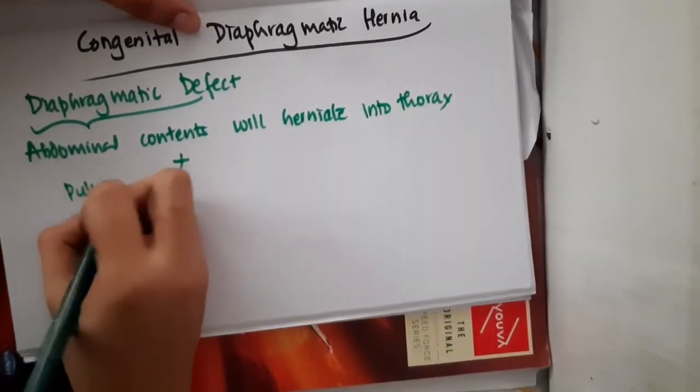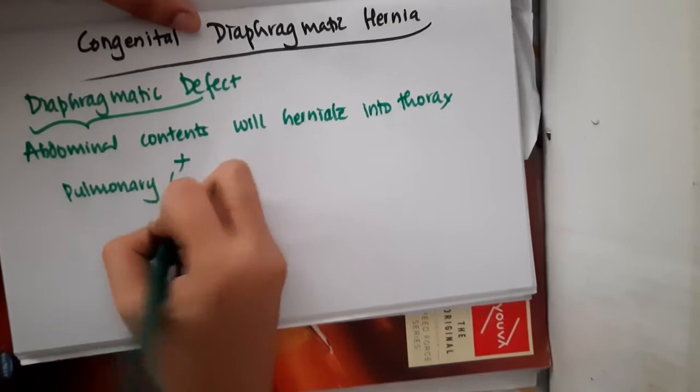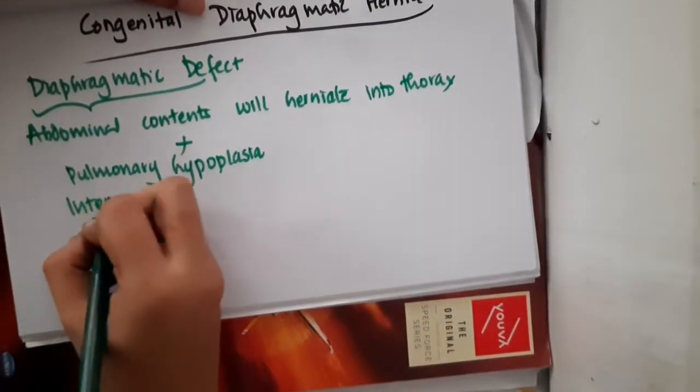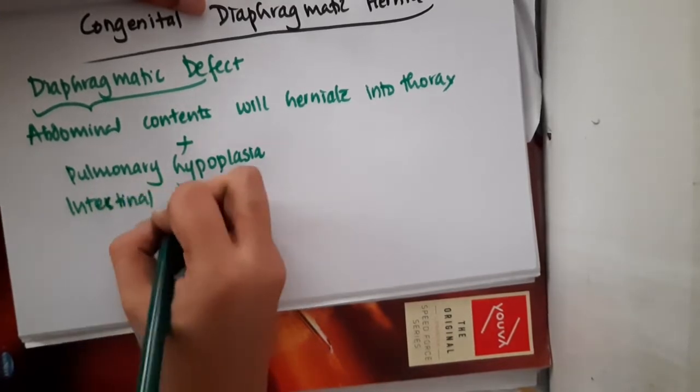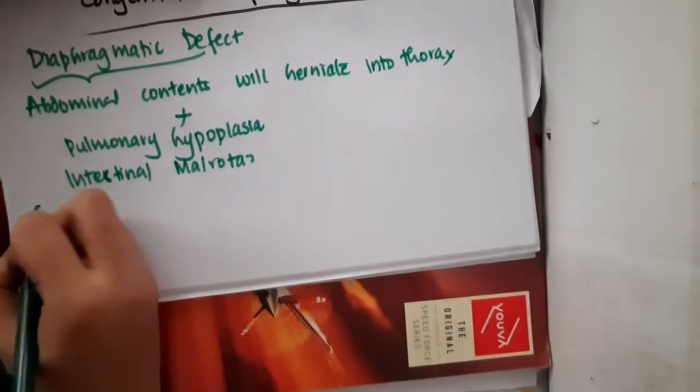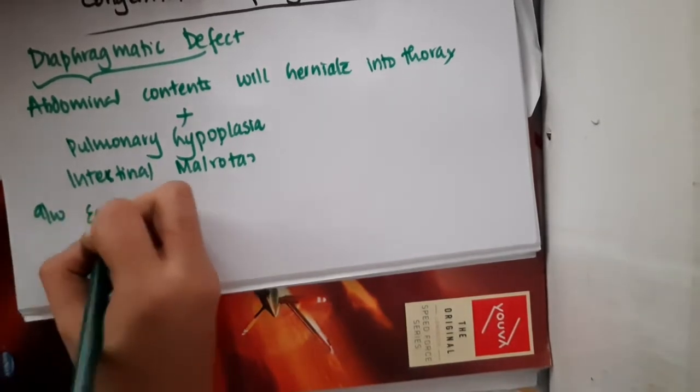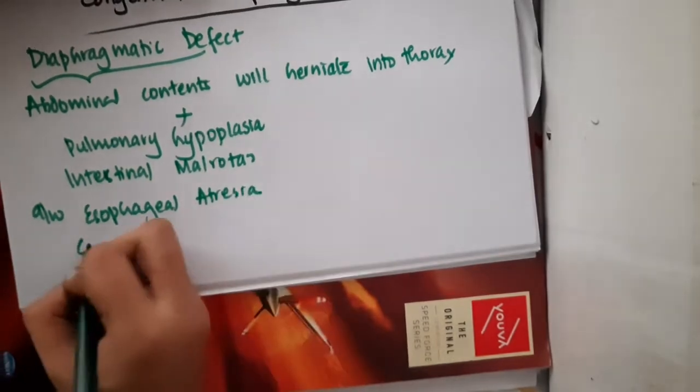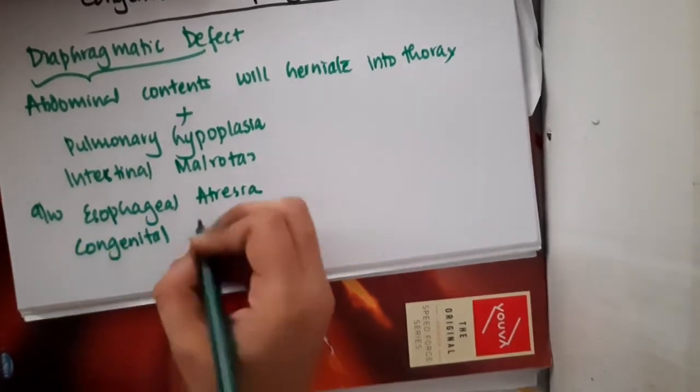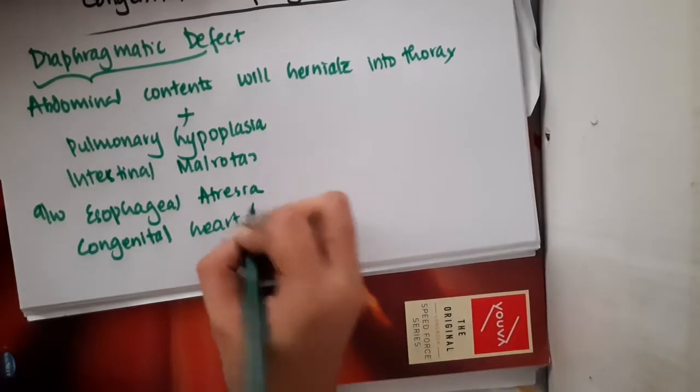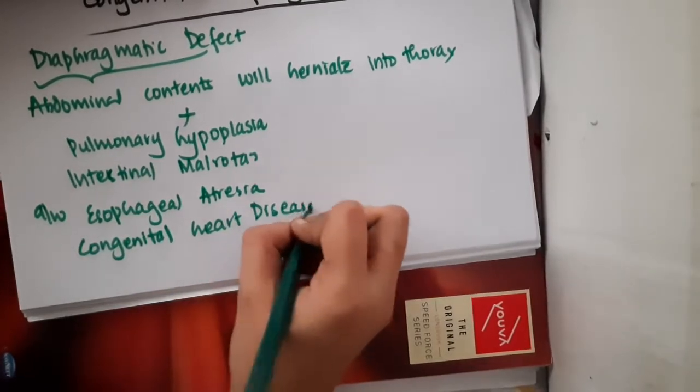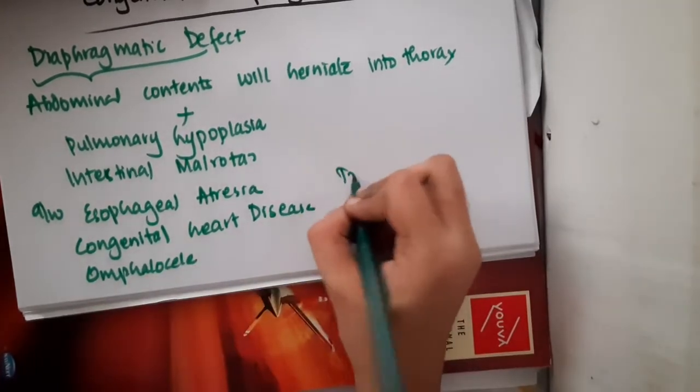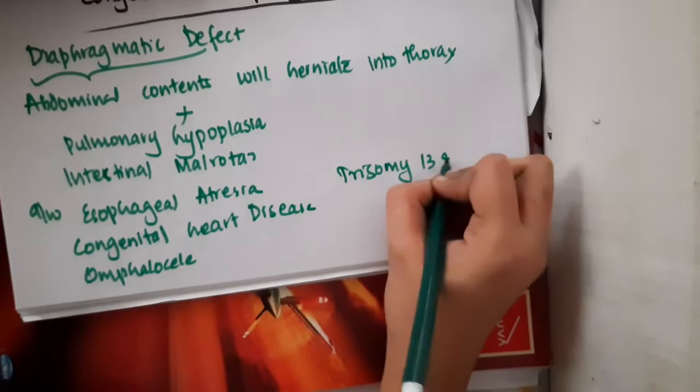Along with that, pulmonary hypoplasia will be seen and intestinal malrotation is also present. These are associated with esophageal atresia, congenital heart diseases, omphalocele, and trisomy 13 and 18.